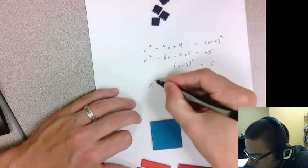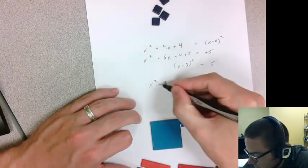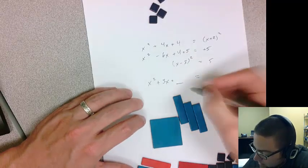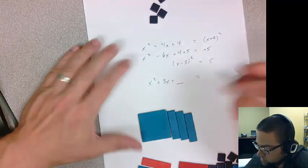So if I had x squared plus 3x plus something, what would I add to both sides to complete the square? Well,